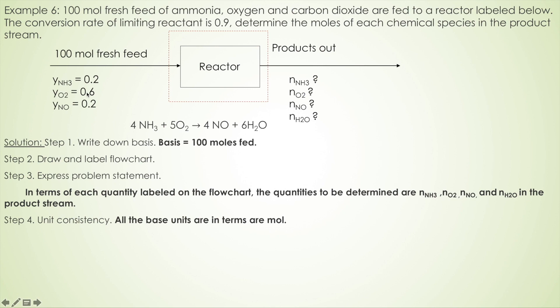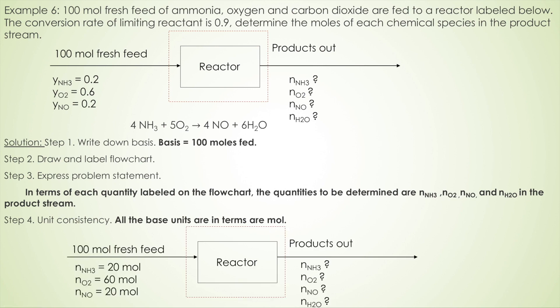Therefore, we can convert all the units to moles. Because the mole fraction is given and the fresh feed total moles is given, we can convert the entire stream to moles. So mole fraction of ammonia 0.2 times 100 gives 20 moles in the fresh feed. Do the same for the other two species.